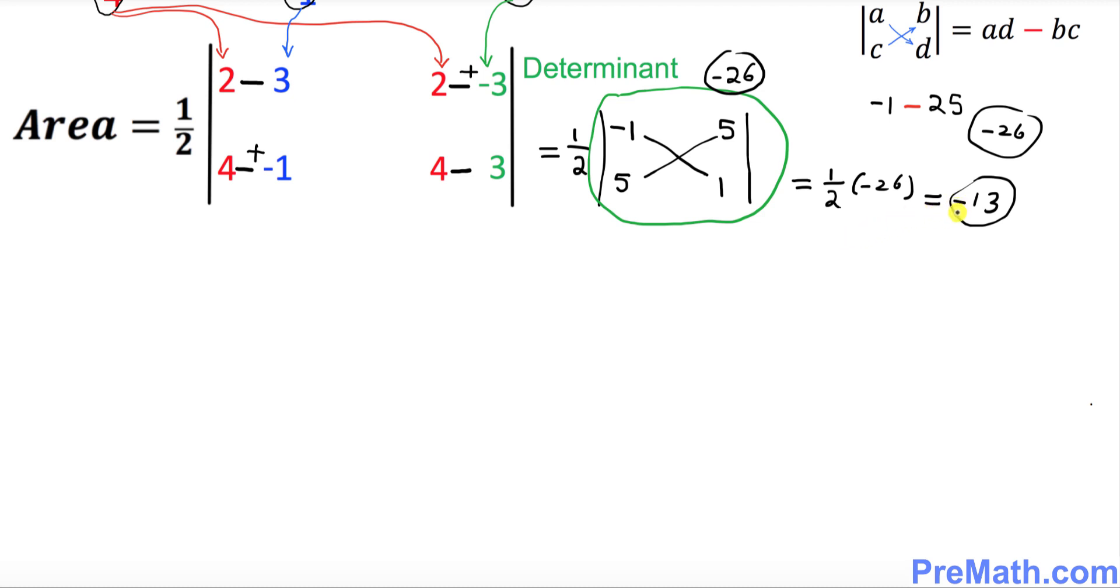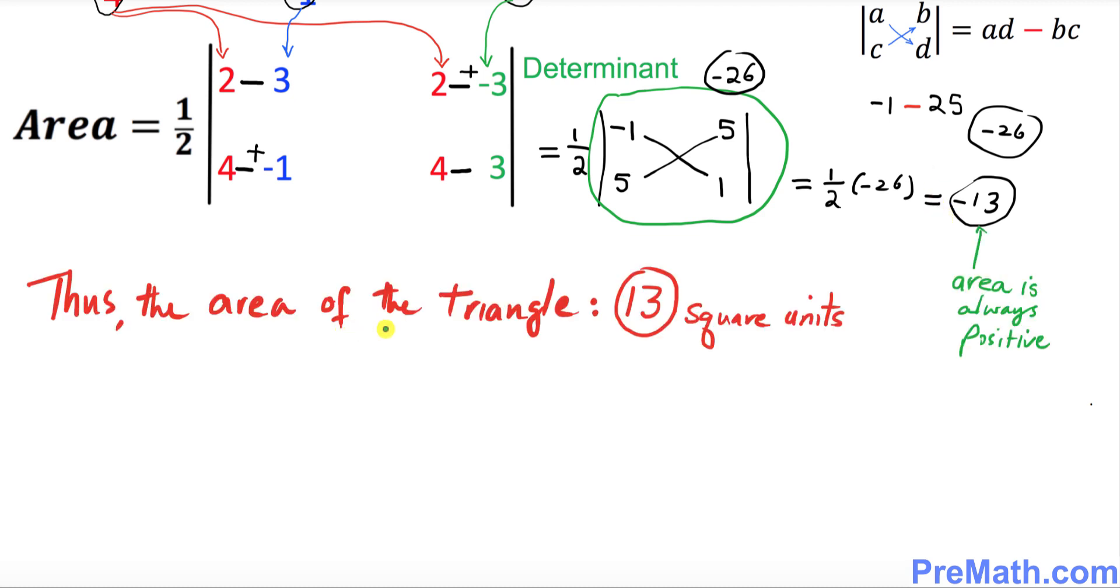Always remember, area is always positive. Even if it is a negative sign, you must make it positive. Thus the area of the triangle turns out to be a positive 13 square units. Thanks for watching and please subscribe to my channel for more exciting videos.